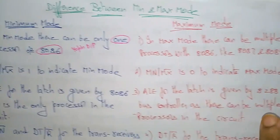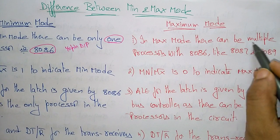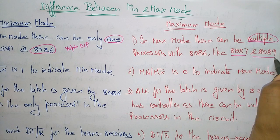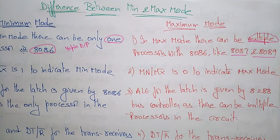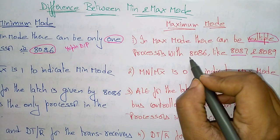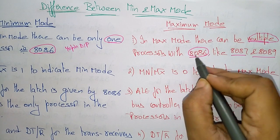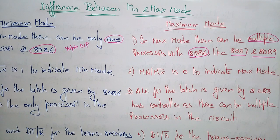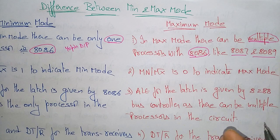Whereas in maximum mode, there can be multiple processors, like 8087 and 8089. The 8086 is already doing all operations — arithmetic calculations and everything like the heart of the computer. So why are we going for multiple processors?